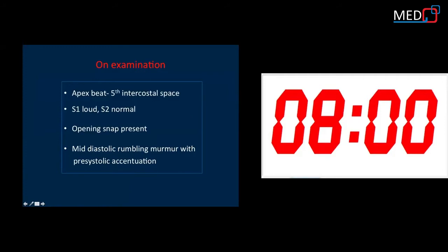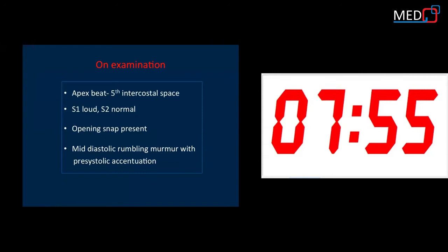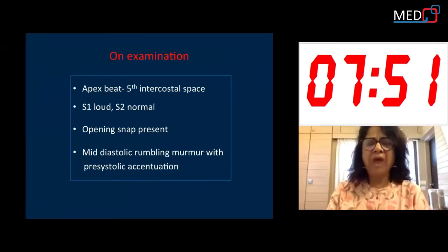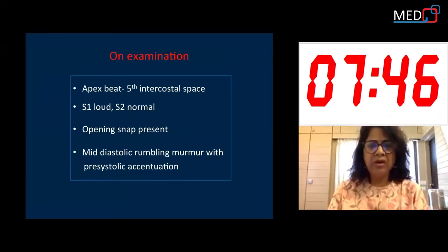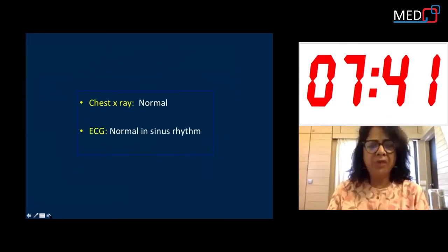All the findings were suggestive of mitral stenosis. The apex beat was in the fifth space, S1 was loud, and an opening snap was present. On echocardiography, ECG and chest X-ray were within normal limits.